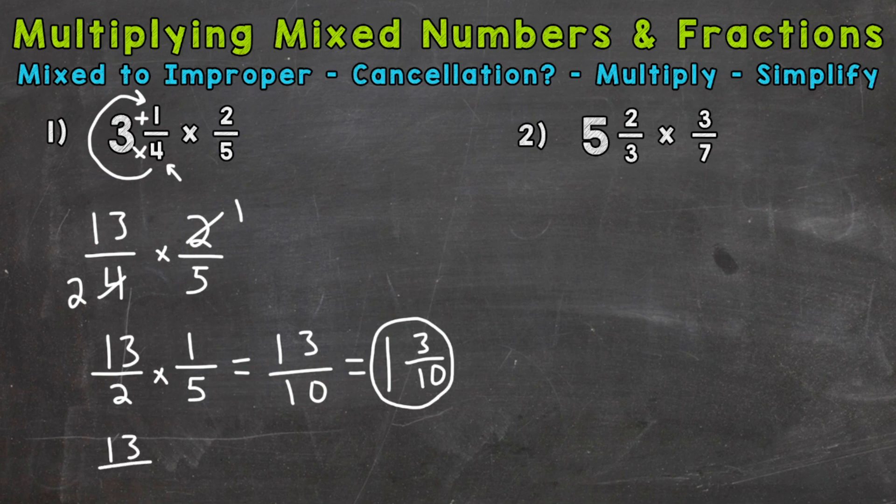So we have 13 over four times two over five. So if you do not use cross cancellation, that's fine. You'll get to the same answer. So 13 times two is 26. Four times five is 20. And then we would do 26 divided by 20 to get to a mixed number. So how many whole groups of 20 out of 26? One.